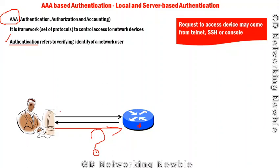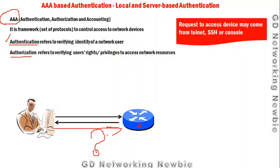The second component is Authorization. Once the router asks the user who they are, the user provides a username and password to prove their identity. After passing this identity check, the second part determines what actions the user is authorized to perform — maybe only user mode, or maybe privilege mode of the IOS on the router. We set the privileges and authority of different users using this second component of the AAA framework.